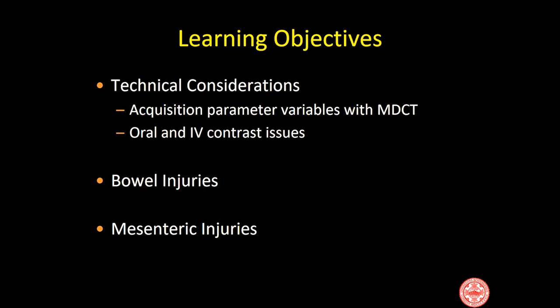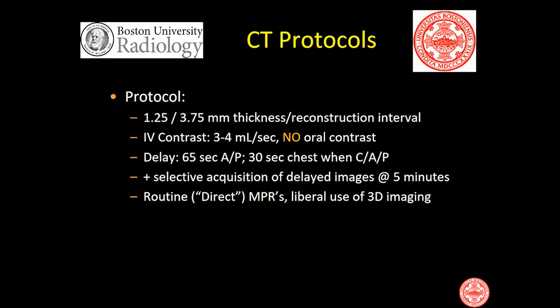We will cover some aspects about the technique of CT for these patients and then direct aspects about bowel injuries and mesenteric injuries. In general, we acquire images with a thin slice reconstructed at thicker slices — we use 1.25 millimeters and then reconstruct them at 3.75 — and use mostly the thicker slices for evaluation, with the thin slices available for problem solving.